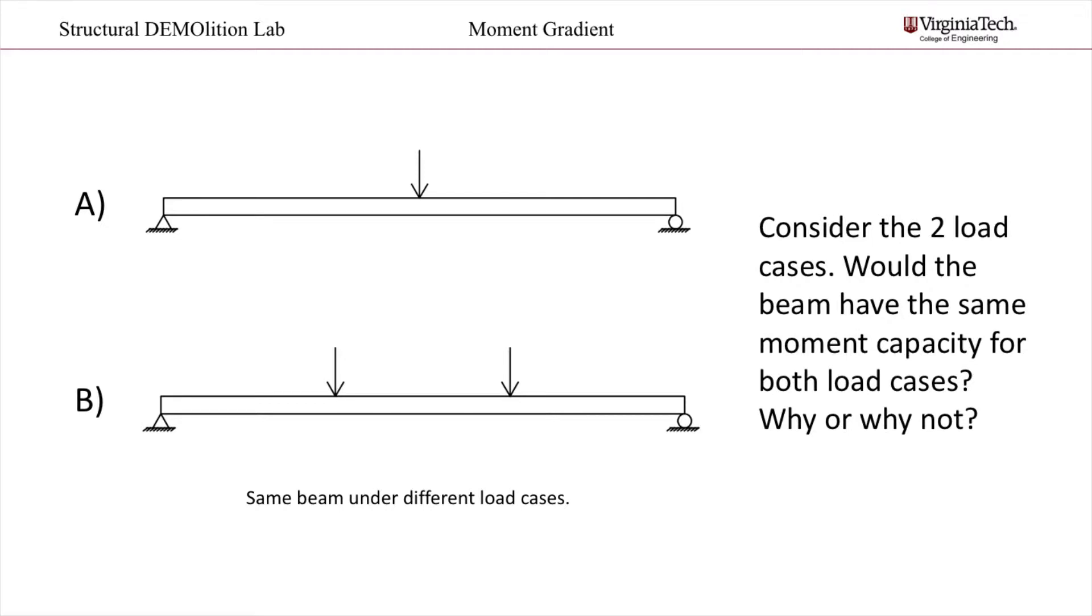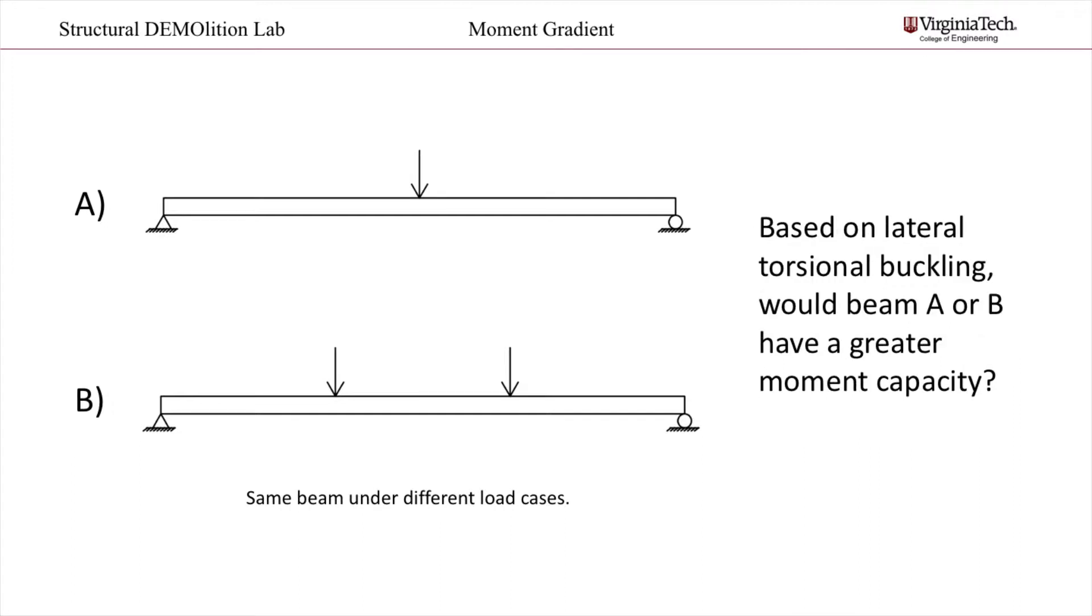In other words, if there are large moments across the entire length of the beam, then the section will buckle at a lower moment. So do you think load case A or B would give a greater moment capacity?